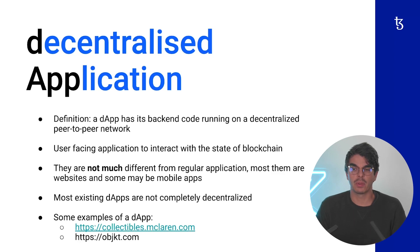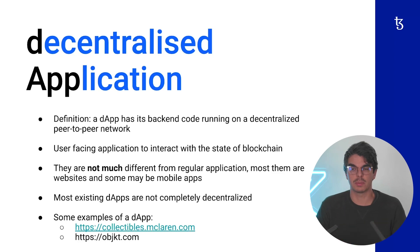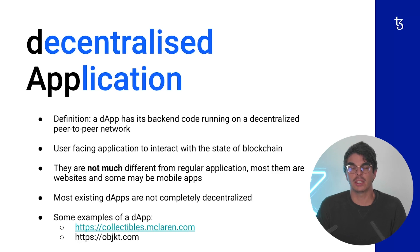Contrast this with an app where the back-end code is running on a centralized server — a server that you might have deployed to AWS or might be running on your own computer or your company's computer. This is a centralized server, which is very different from a decentralized network, a blockchain. So at a high level, you can think of a DAP as a user-facing application to interact with the blockchain. In terms of appearances, many DAPs appear just like any normal app — they can appear like a website or an app on your phone.